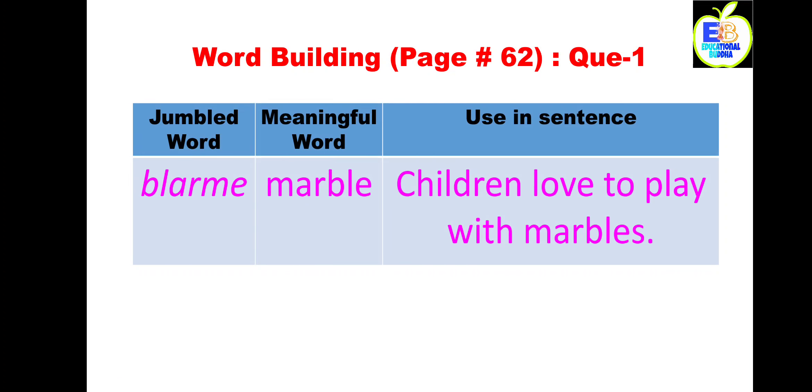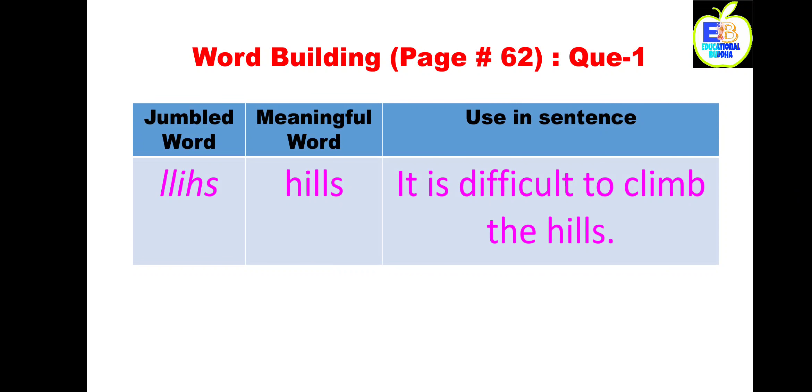Come to the next question. Next jumbled word: b-l-a-r-m-e. The meaningful word from this jumbled word is marble, m-a-r-b-l-e. Sentence: children love to play with marbles. Next jumbled letter: l-l-i-h-s. The meaningful word is hills, h-i-l-l-s. The sentence: it is difficult to climb the hills. This is climb, not climb. B is a silent letter, so we have to pronounce this word as climb.